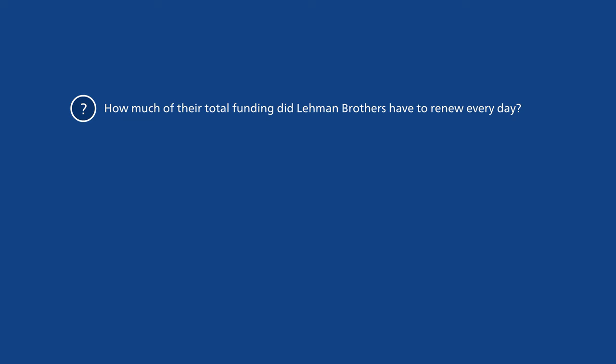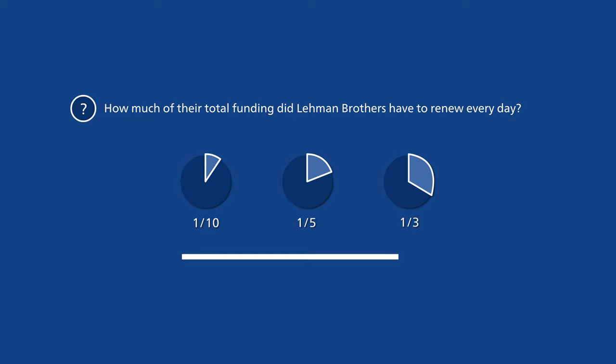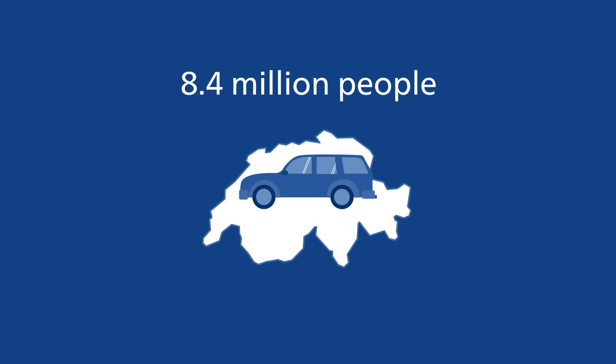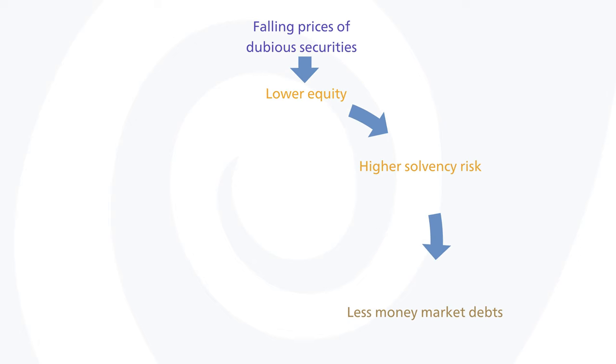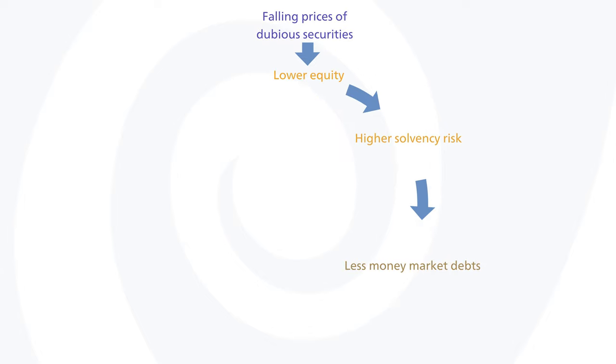Suddenly the fact that banks had financed these securities with short-term money market debt became a problem — they had to renew these debts every single day. How much of their total funding did Lehman Brothers have to renew every day shortly before filing for bankruptcy? The right answer is a third, or 200 billion US dollars — enough to buy a new family car for every single person living in Switzerland. Such short-term money market debts had not been a problem in the past, but now it was unclear whether these banks were still solvent — whether they had enough money to repay their debts. As a result, they received less money from the money markets. This is how a solvency problem suddenly resulted in a serious liquidity problem.